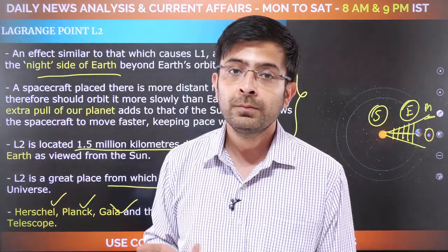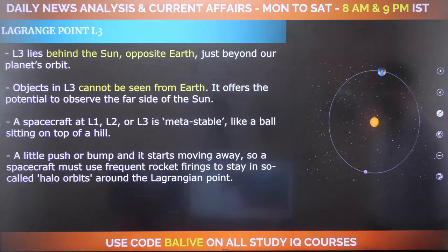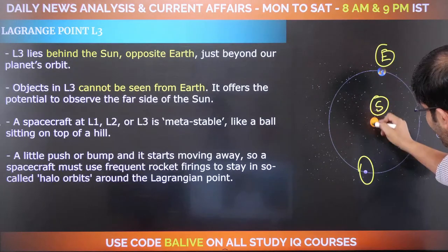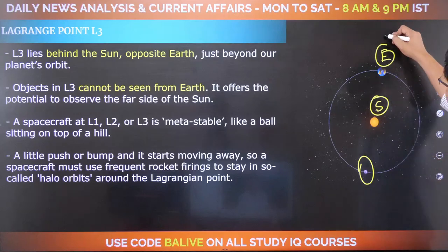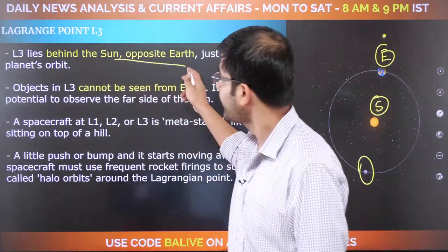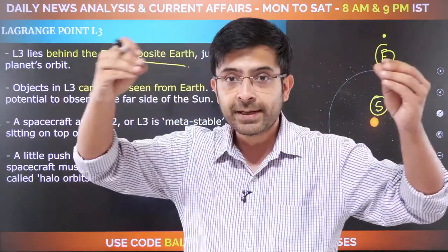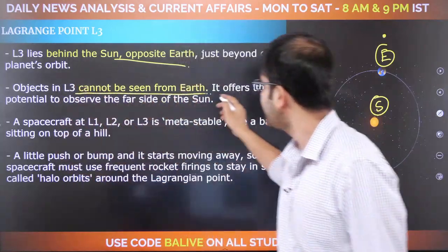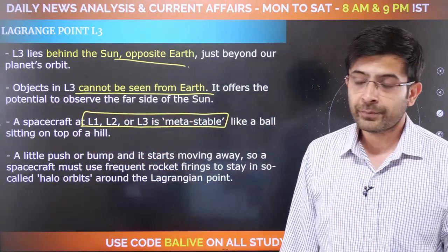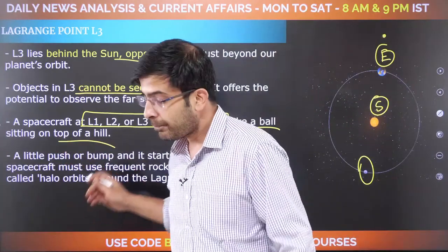To summarize: if you want to see the sun, go to L1; for deep space, go to L2. Then there is L3 — behind the sun, opposite earth. Here, earth is here, sun is here, and you are behind the sun. You are blocked from seeing earth and earth cannot see you. These three points — L1, L2, and L3 — are called metastable or partially stable. They need rocket boosters continuously firing to maintain stability, because without them these positions become unstable.